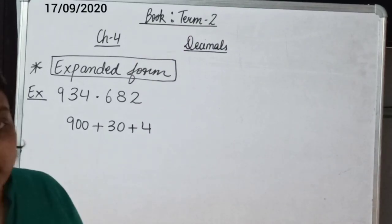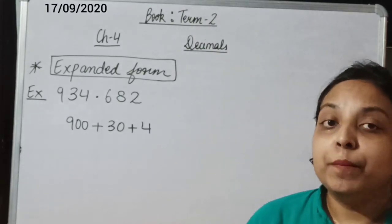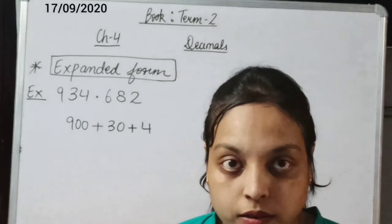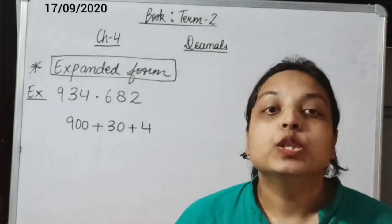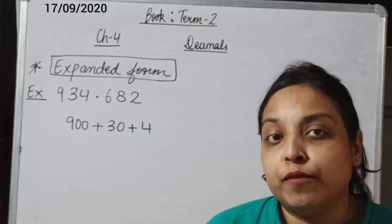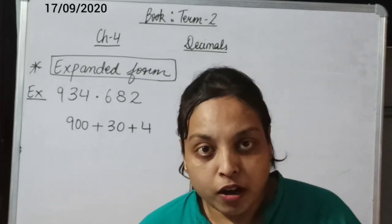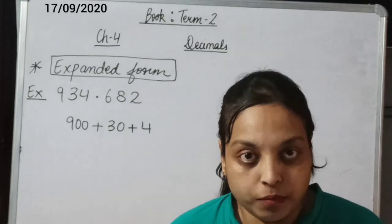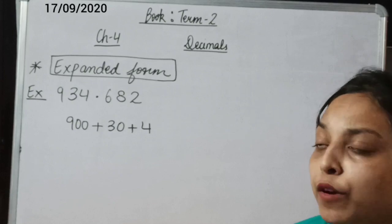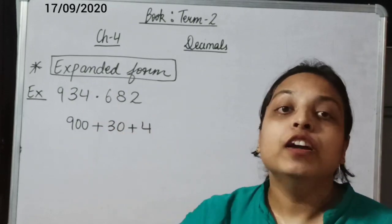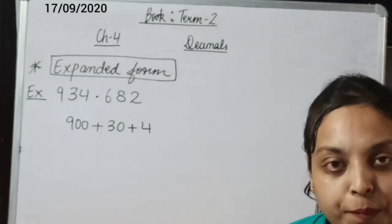Now, how can we write the expanded form of the decimal part? The decimal part means the part of a whole, and the part of a whole can be expressed as both a fraction and a decimal. So for writing the expanded form of the decimal part, we can write it in fractional form or decimal form. This means for a decimal number, we have two expansions: fractional expansion and decimal expansion.